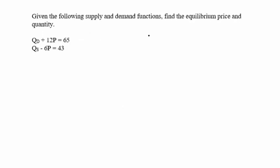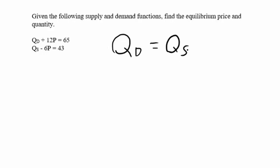Next, we're asked to find the equilibrium price and quantity given a quantity demanded function of Qd plus 12p equals 65, and a quantity supplied function of Qs minus 6p equals 43.